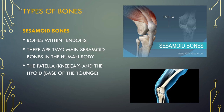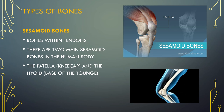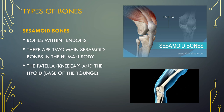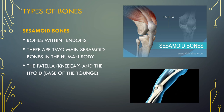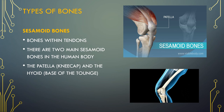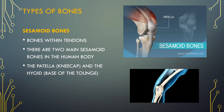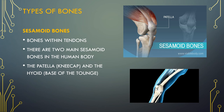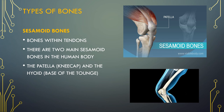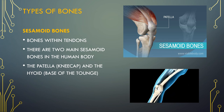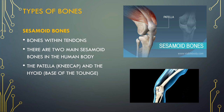Sesamoid bones are bones embedded in tendons. These small, round bones are commonly found in tendons of the hands, knees and feet. Sesamoid bones function to protect tendons from stress and wear. The patella, commonly referred to as the kneecap, is an example of a sesamoid bone, along with the hyoid bone, which is found at the base of the thumb.